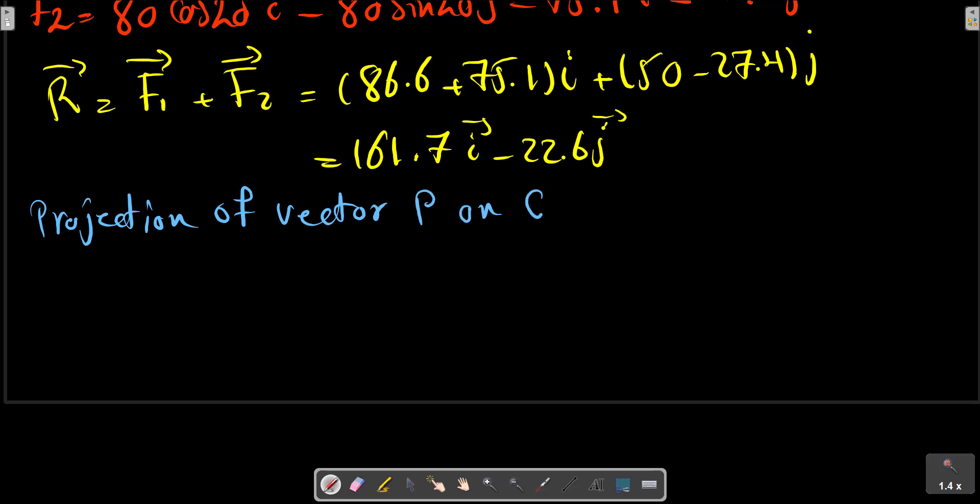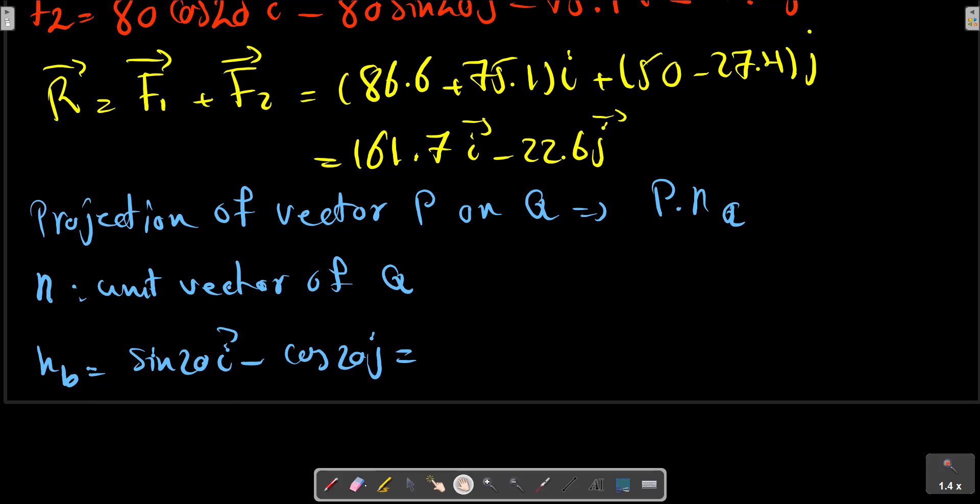Projection of P on Q is P multiplied by n_Q, where n_Q is the unit vector of Q. In this case, n_b is cos minus 20 i minus sin minus 20 j.